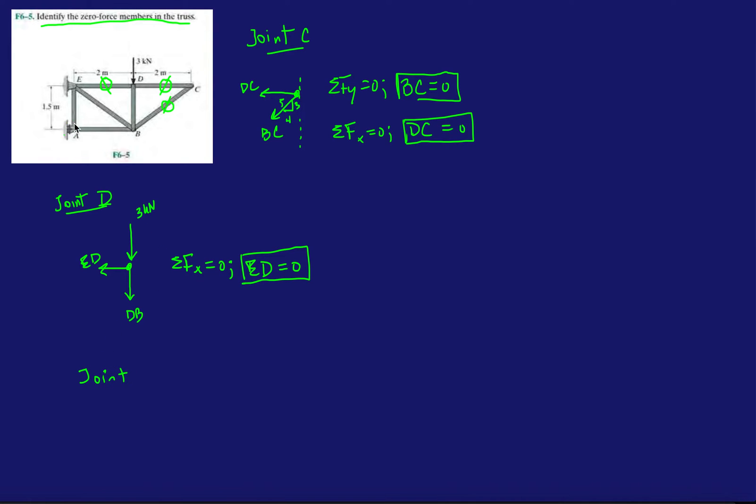All right. So, remember, there is a roller over here at A. So, I know that the roller usually has one reaction force going away or normal to the page. So, AX, right. So, then, if I look at joint A, I have, let's draw AX. Let's draw AX going this way. All right.